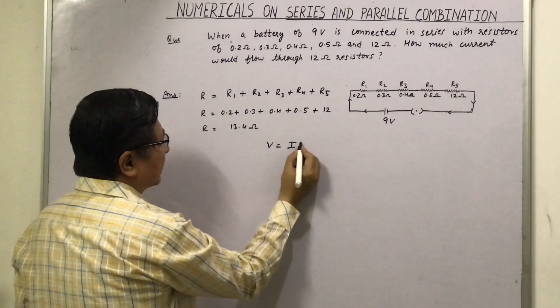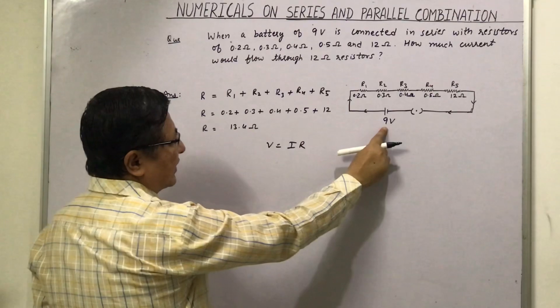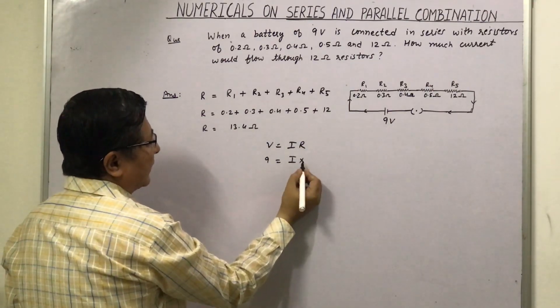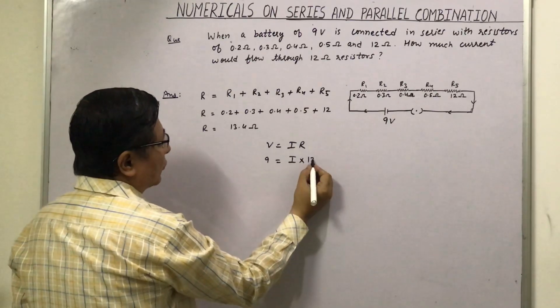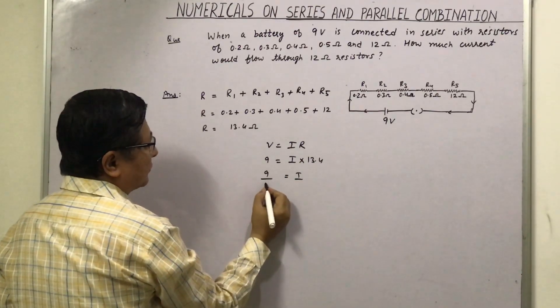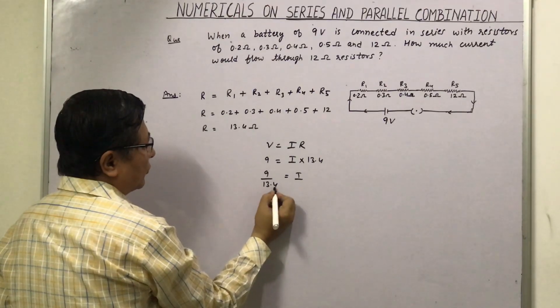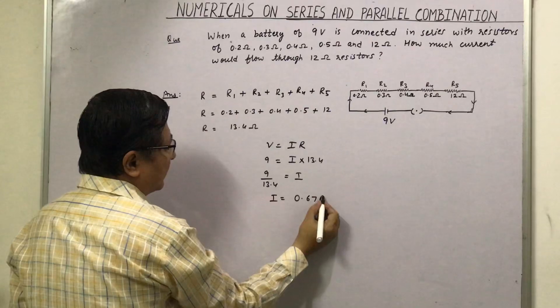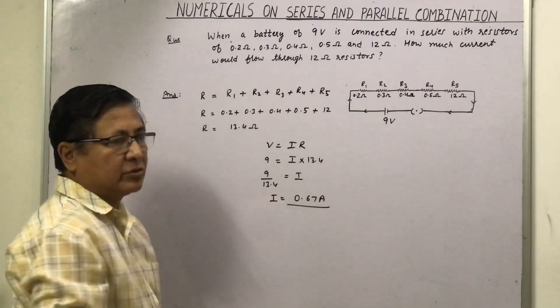Now according to Ohm's law, V is equal to IR. V is given, that is 9 volt. I we have to calculate and R is 13.4. So I will be equal to 9 upon 13.4, so current will be equal to 0.67 ampere. Many students do the mistake,